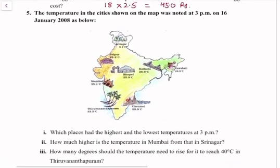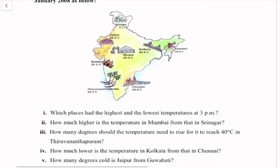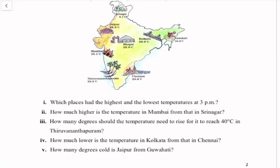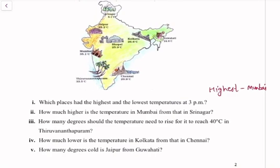Question number 5: The temperature in the city shown on the map was noted at 3 pm on 16th January 2008. Which place had the highest and lowest temperature at 3 pm? The highest temperature was at Mumbai with 35.1 degrees Celsius. The lowest was at Srinagar. How much higher is the temperature in Mumbai than in Srinagar? We subtract 8.1 from 35.1 and get 27 degrees Celsius.